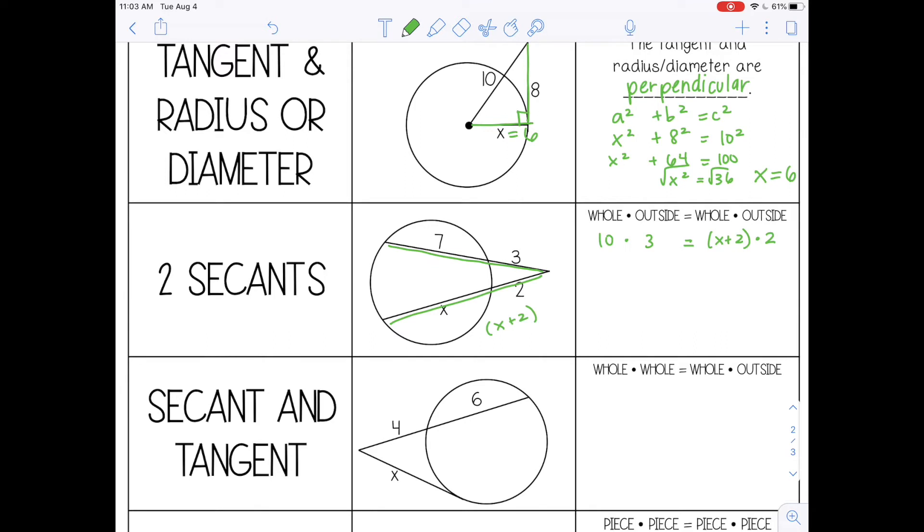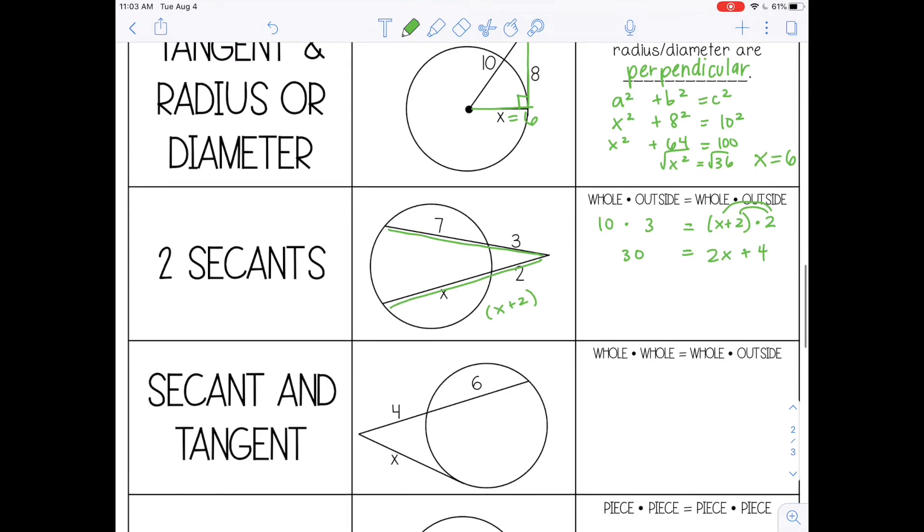All right, so on the left, I'm going to multiply 10 times 3 is 30. On the right, I need to distribute that 2. So 2 times x is 2x, 2 times 2 is 4. And then I can just solve it like a normal two-step equation. So I'm going to subtract 4 from both sides and then divide by 2. So x equals 13. So the length of this piece is 13.